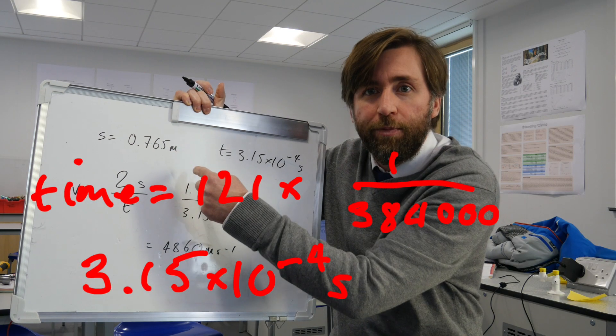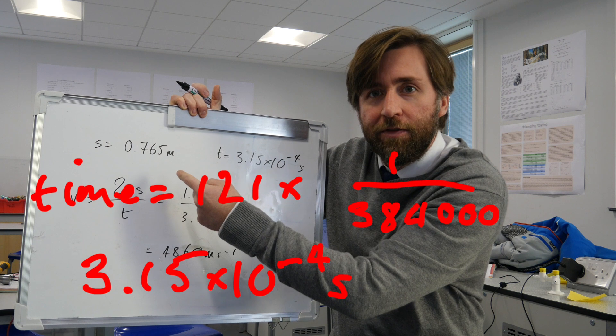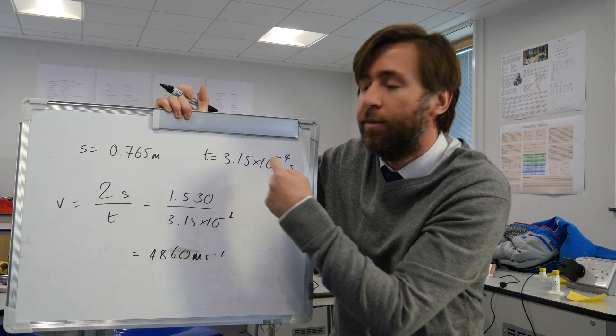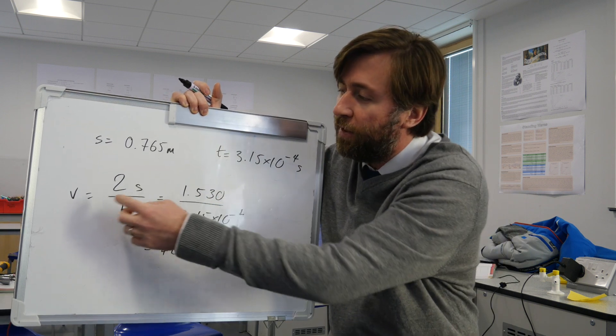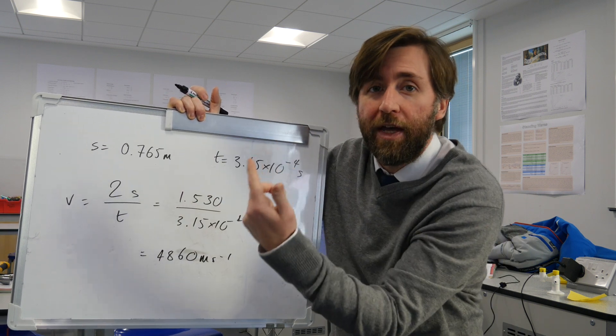And the time roughly is, the length of the bar was 0.765 meters. The time from our graph there was 3.15 times 10 to the minus 4 seconds. And the speed therefore is 2 times that distance because the wave has gone there and back.